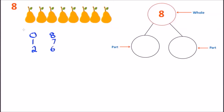Let's go back to the pairs and count some more. Counting: 1, 2, and 1, 2, and 3. So let me put down the number 3. Now let's see what's remaining: 1, 2, 3, 4, and 5. We have 5 pairs, so let me put down the number 5. Our next number bond is a 3 and a 5 — 3 on the left side, 5 on the right side. Three and five gives us a whole of 8.